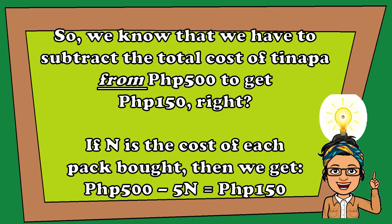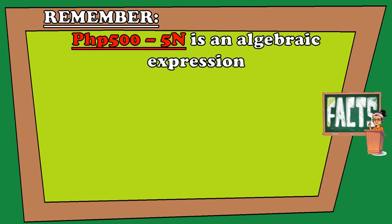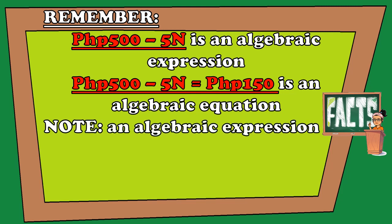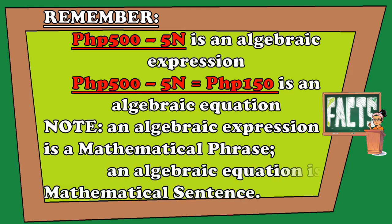Remember, 500 pesos minus 5n is called an algebraic expression, while 500 pesos minus 5n equals 150 pesos is called an algebraic equation. Take note that an algebraic expression is a mathematical phrase, while an algebraic equation is a mathematical sentence.